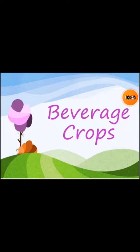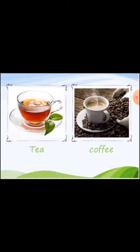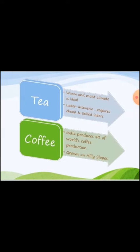Now we come to beverages — the hot drinks that we drink, like tea and coffee. Tea grows well in warm and moist climate. It is labor intensive, requiring many people to be involved in its cultivation and production, and requires cheap and skilled labor. India produces about 4% of the world's coffee production. Coffee grows on hilly slopes.